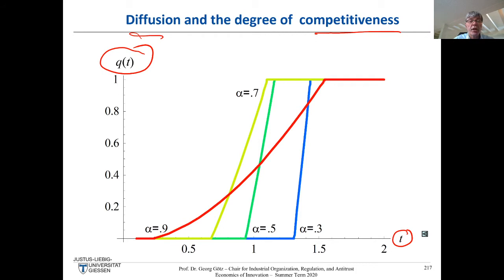If α approaches zero, we're back in the monopoly case because the elasticity of demand approaches 1 — and competition disappears from the model.